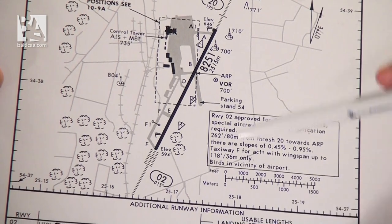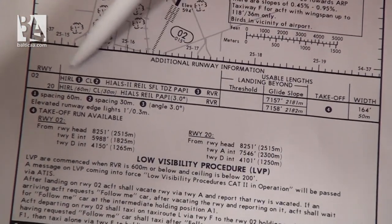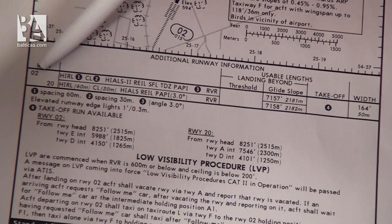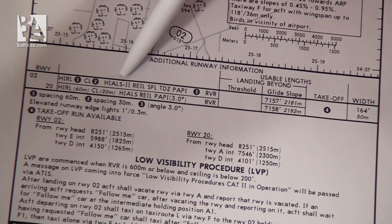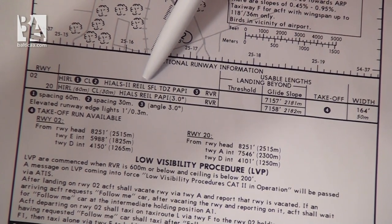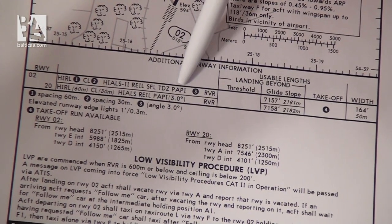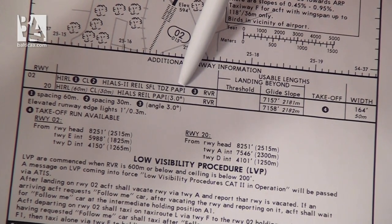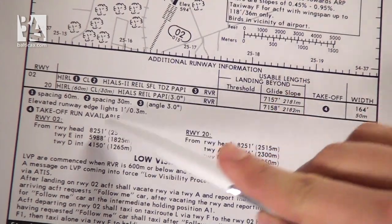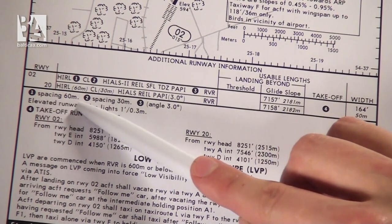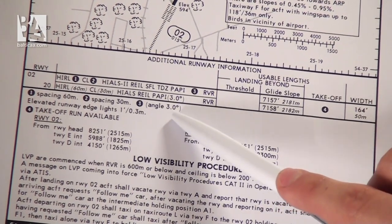Below the map you have the additional runway information section. On the left you have the runway lighting systems. For example, for runway 02 you have high intensity runway lights, centerline lights, high intensity approach lighting system number 2, runway end identifier lights, sequence flashing lights, and touchdown zone. There are also circled numbers 1, 2, and 3 which give additional information — for example that the high intensity runway lights have a spacing of 60 meters, or that the precision approach path indicator is angled at 3 degrees.